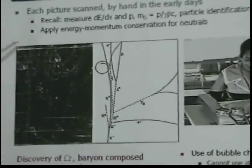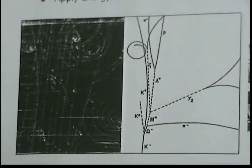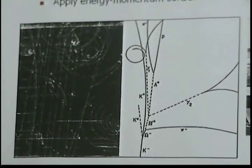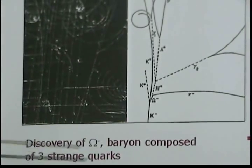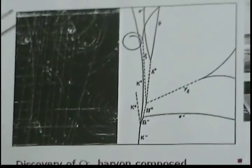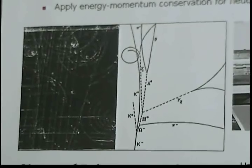So here's a picture of an interaction in a bubble chamber. And this is actually a very famous one, because this is the discovery of the omega minus, which is a baryon that's composed of three strange quarks. So this is the picture that you get, and then you analyze it.